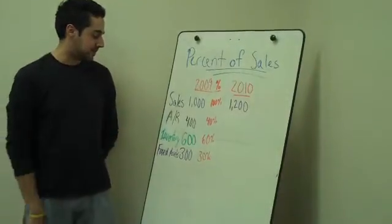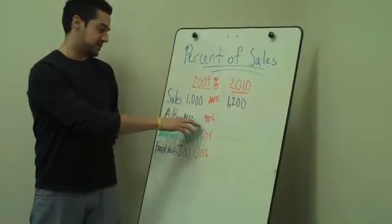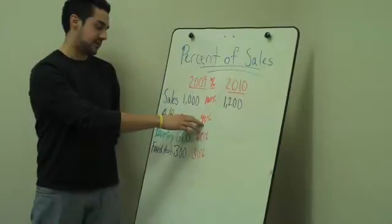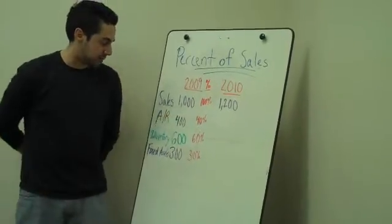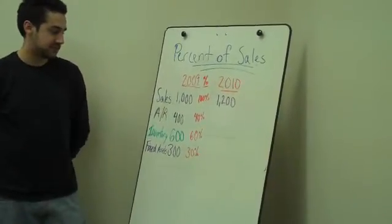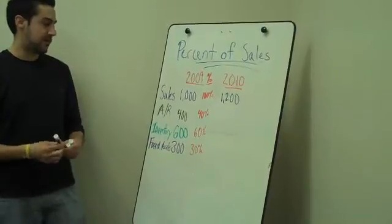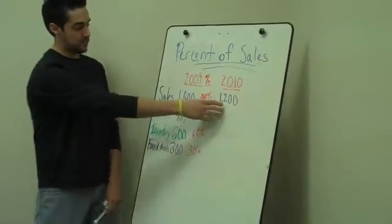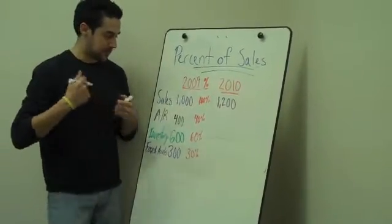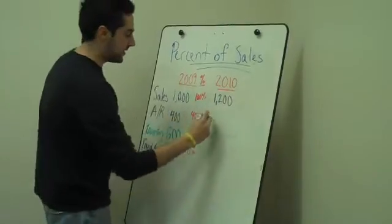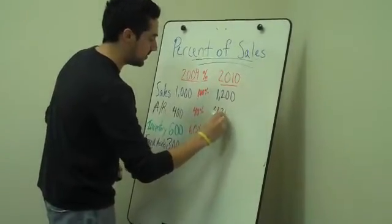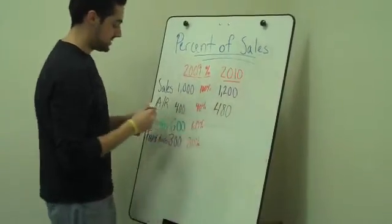For example, accounts receivable is usually, historically, and in 2009, 40% of your sales. If you project that out, 40% of 1,200 is 480. That will give you your accounts receivable for 2010.